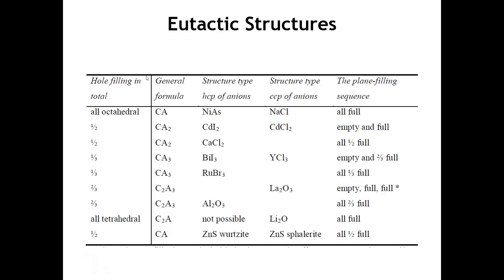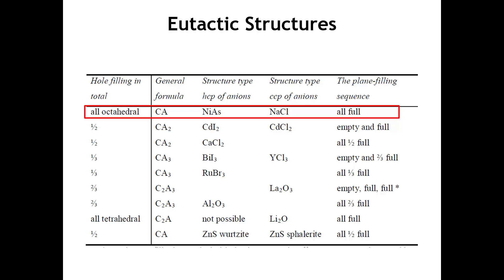With that basic idea, we can describe many ionic structures by filling either octahedral or tetrahedral holes in either hexagonal close-packed or cubic close-packed anion arrays. Filling all octahedral holes in an HCP array gives the nickel-arsenide structure; filling all octahedral holes in a CCP array gives the sodium chloride structure. In both cases the stoichiometry is 1:1 cation to anion, because the number of octahedral holes equals the number of anions.